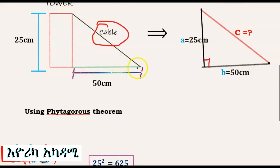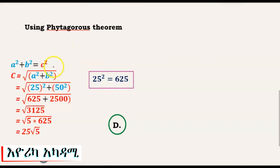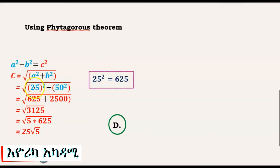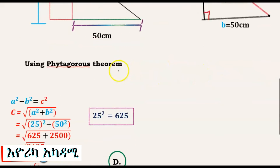H is the height, equal to the ground distance. C equals the square root of A squared plus B squared, where A means 25 cm and B means 50 cm.